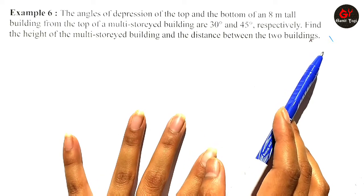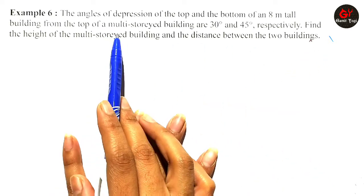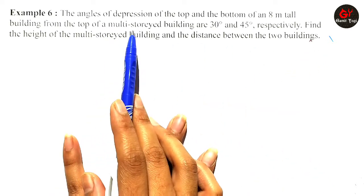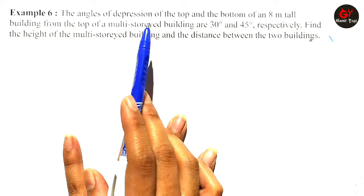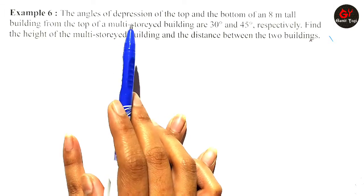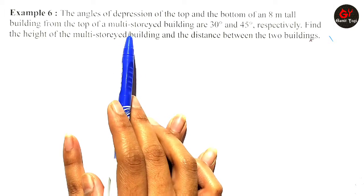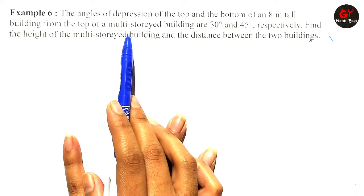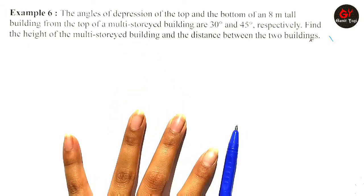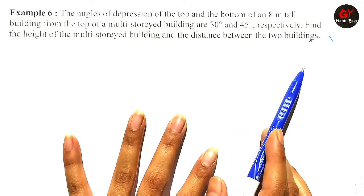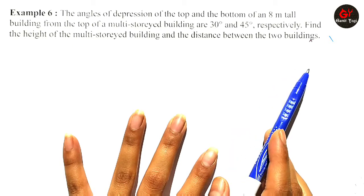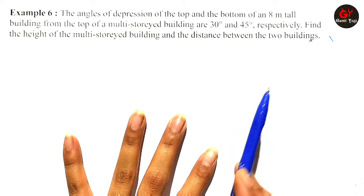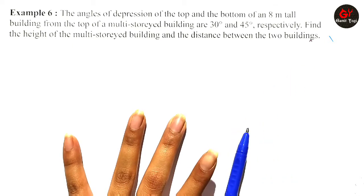What we have to keep in mind is that the angle of elevation is the one we see from the bottom looking up, and the angle of depression is the one we see looking down from the top.